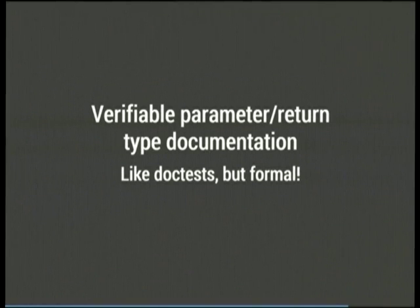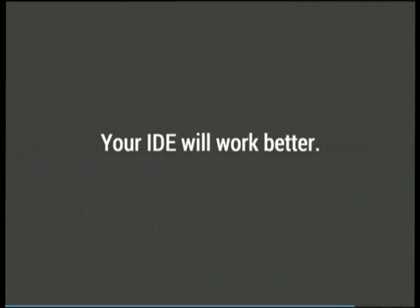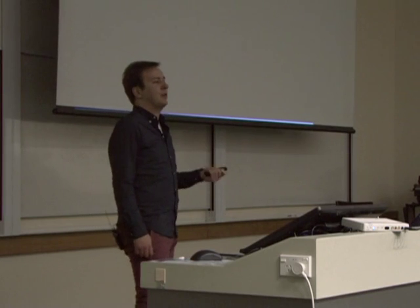You no longer need to write separate documentation about what your parameters take and return — you can automatically generate type verification documentation and test that it's up to date. If your documentation is wrong, your tests will be failing at the same time. Perhaps most importantly, if you use an IDE and expect autocomplete behavior, you probably won't get it reliably in Python. Only about 50% to 60% of Python statements can accurately have their return and parameter types inferred, meaning 40% to 50% of what you write won't have accurate autocomplete. Type hinting is going to get that above 80% of return statements.